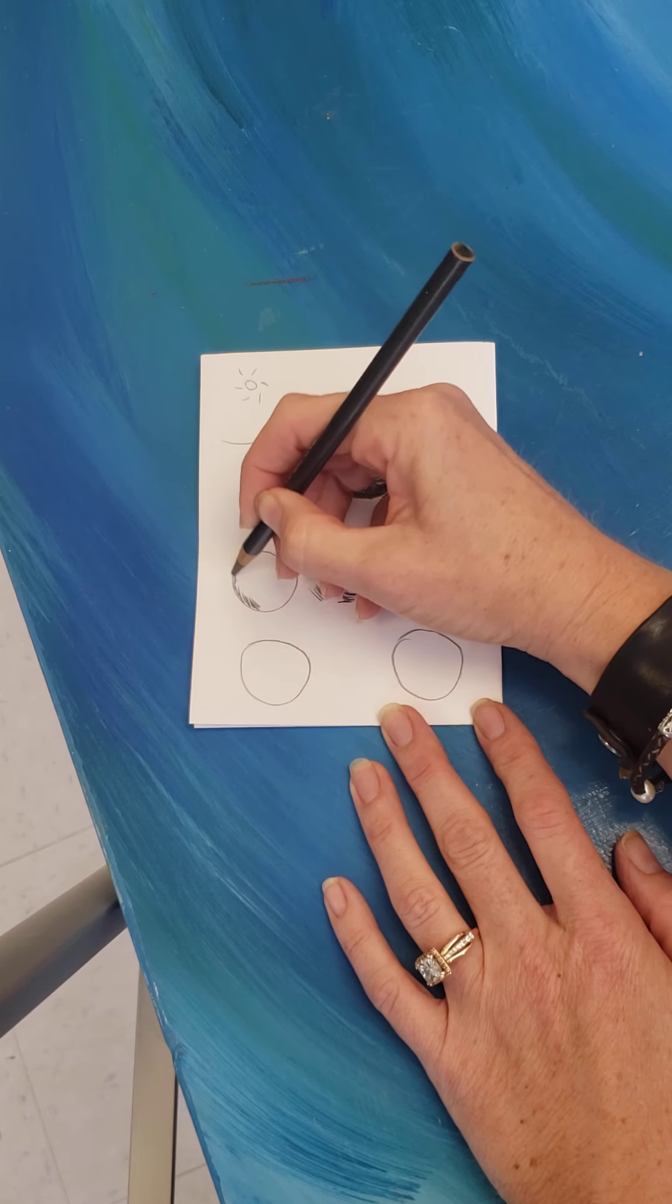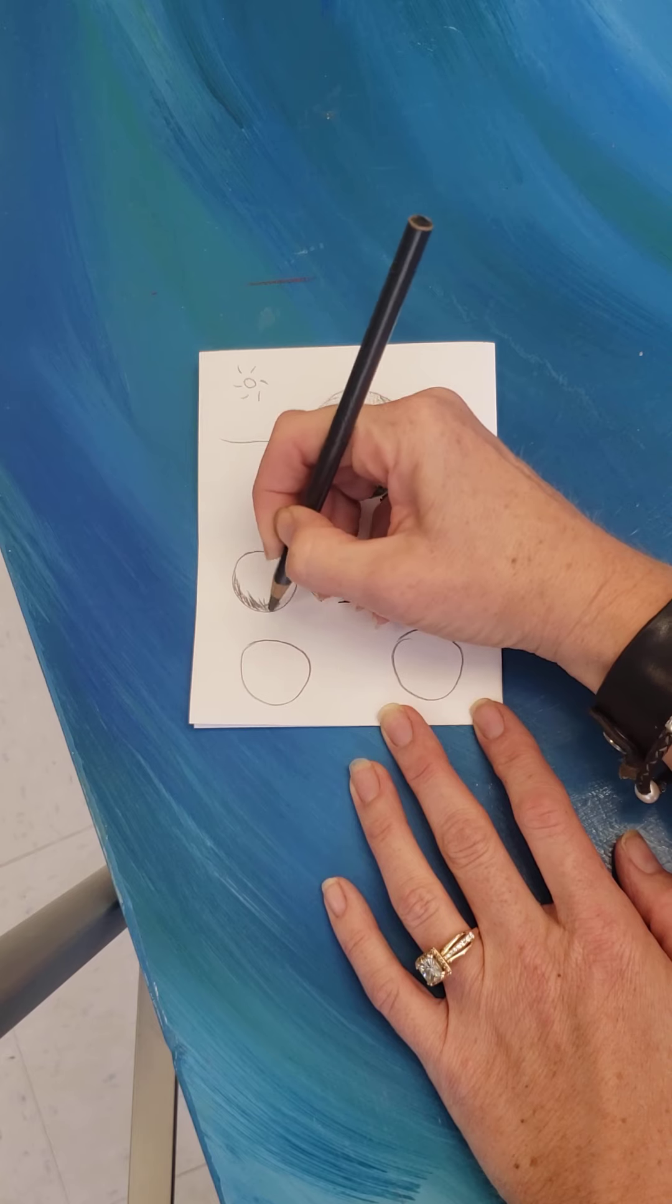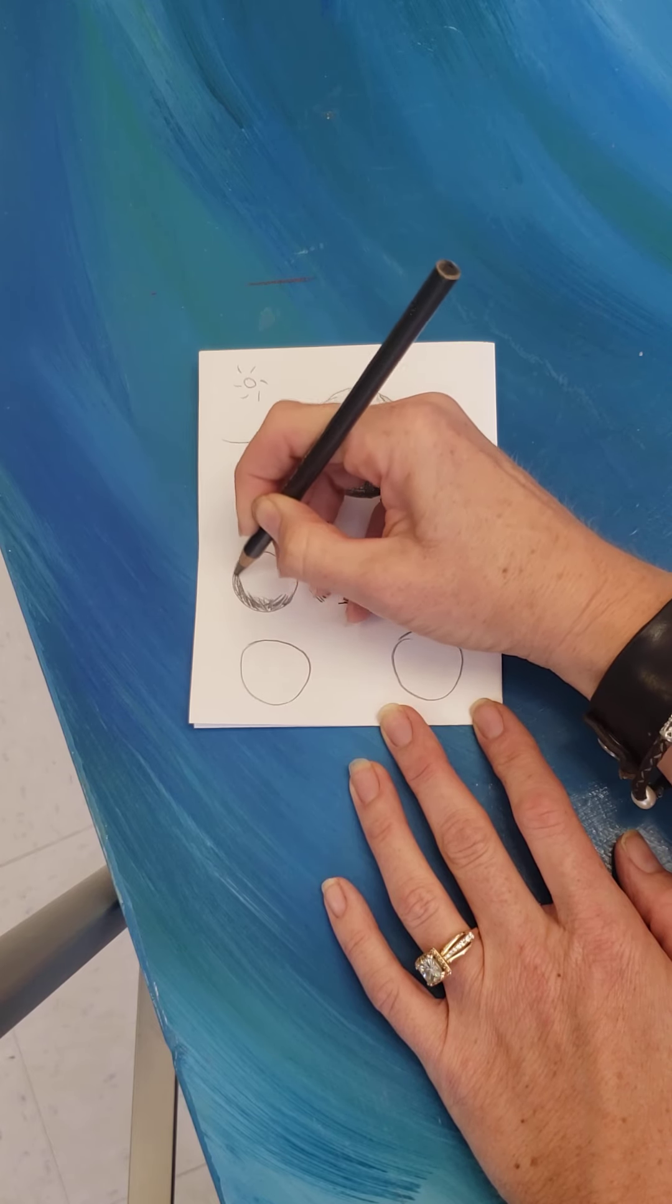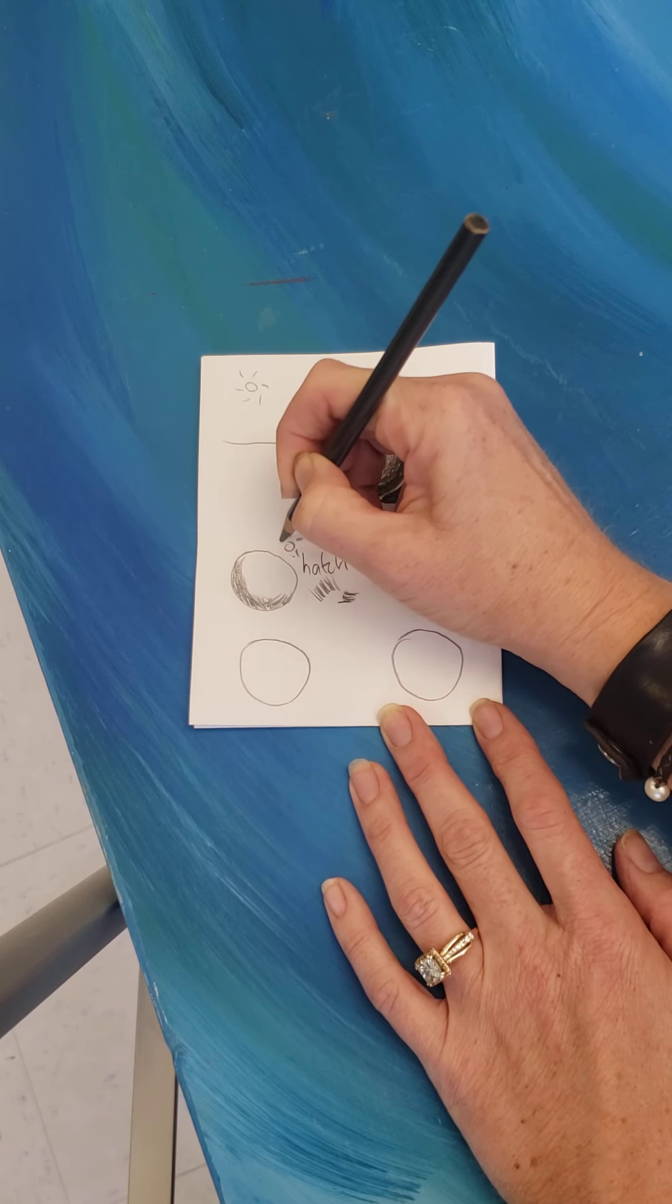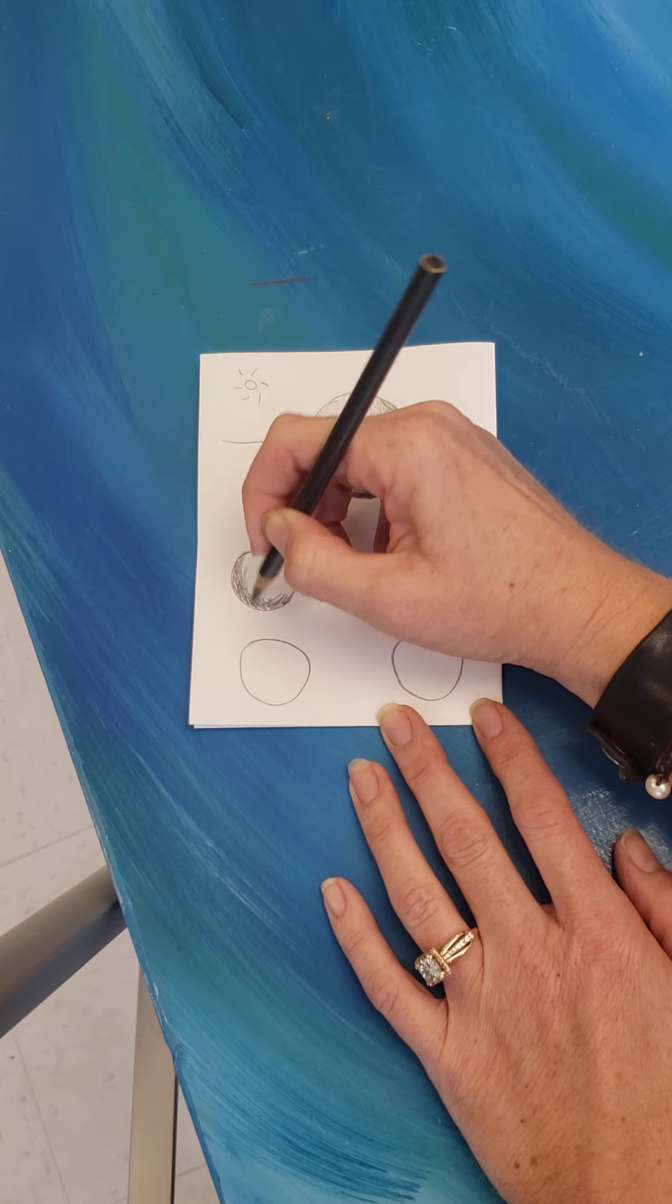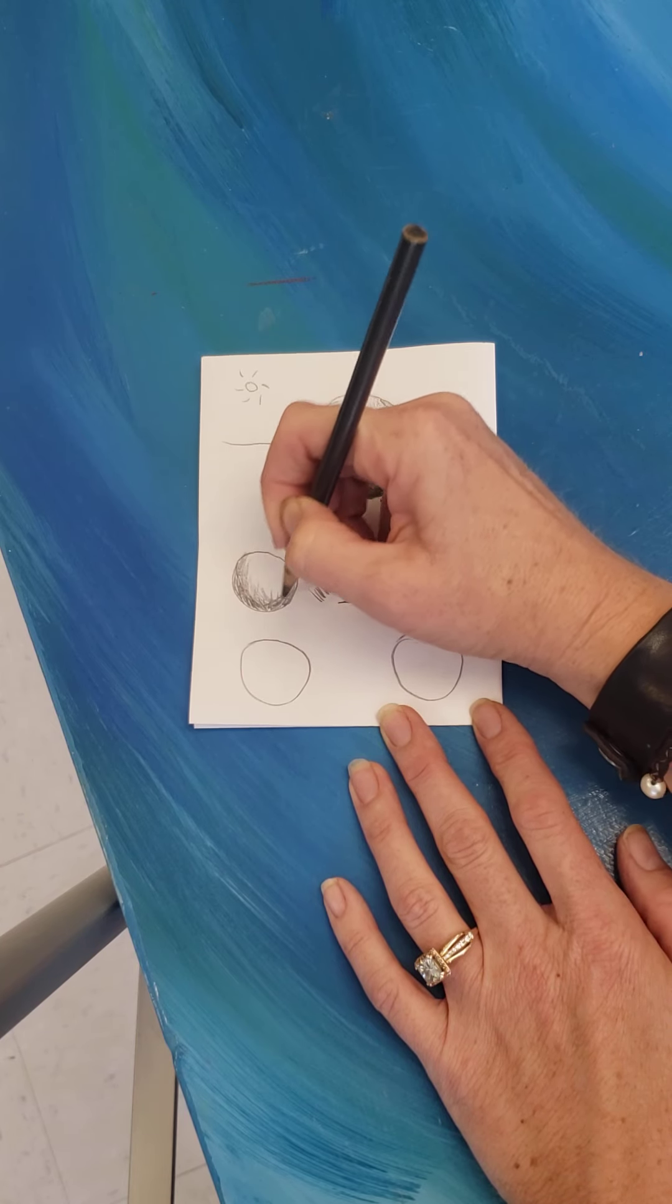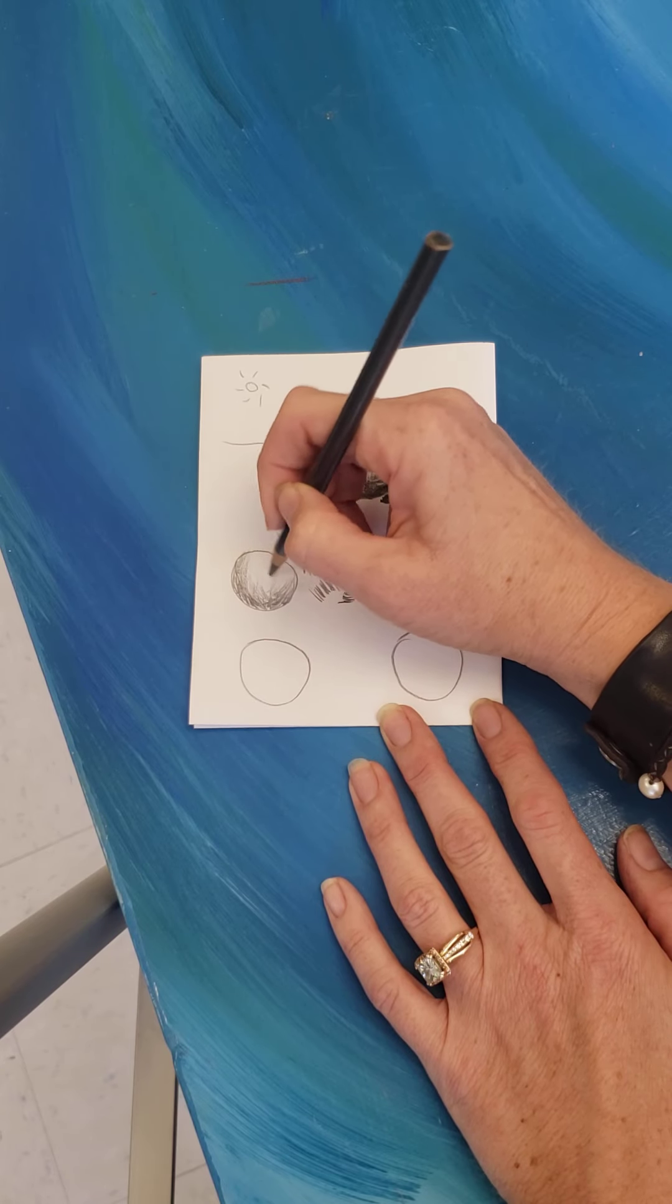So you're going to make a hatch sphere. Notice I changed it to kind of go in the same direction. And then as you get closer towards your light source, your hatches would get lighter. It's just one way. It helps with fur, hair, things like that you would use hatching for. It gets lighter.